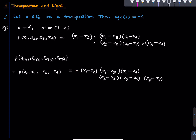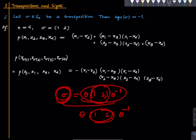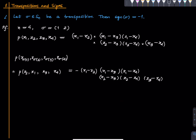Now if we had a more general transposition, we could use the first star-marked problem: sigma would equal theta times the transposition (1,2) times theta inverse for some permutation theta. By the first star-marked problem, every transposition is conjugate to this particular one. The sign of sigma equals the sign of theta times (1,2) times theta inverse, which equals the sign of (1,2), since sign is a homomorphism. And the sign of (1,2) is -1, as we just saw. So that is a complete proof that every transposition has sign -1.